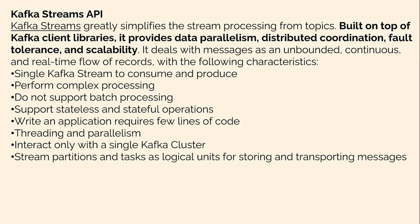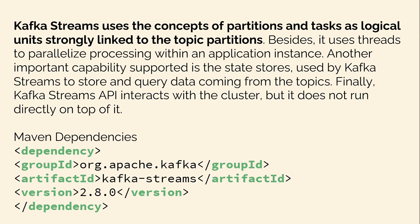Kafka Streams greatly simplifies stream processing from topics. The Kafka client library provides data parallelism, distributed coordination, fault tolerance, and scalability. It deals with messages as an unbounded, continuous, and real-time flow of records. Real-time flow is the important characteristic of Kafka Streams. A single Kafka Stream can consume, produce, and perform complex processing. It does not support batch processing, but supports stateless and stateful operations. Writing an application requires very few lines of code. Kafka Streams supports threading and parallelism, interacts only with a single Kafka cluster, and uses partitions and tasks as logical units for storing and transporting messages. It uses threads to parallelize processing within an application instance. Another important capability is the state store, which is used by Kafka Streams to store and query data coming from the topic.